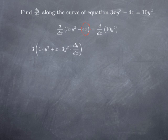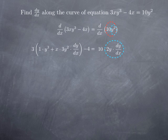When we differentiate 4x with respect to x, x is a variable, so we just get 4. And when we differentiate 10y squared, we get 10 times the derivative of y squared. The derivative of y squared is the derivative of the square of a function, so we use the chain rule and get 2y multiplied by dy over dx. Multiplying things through in the first parenthesis, this is what we obtain.